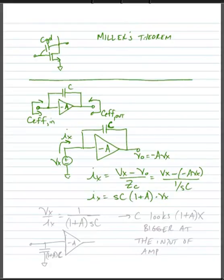And simplifying this to our impedance form, Vx over Ix is equal to 1 divided by 1 plus A times SC. Now remember that if we had just had a capacitor without that gain, the impedance would have been 1 divided by SC.